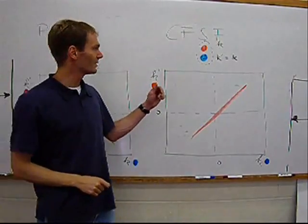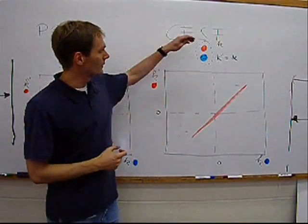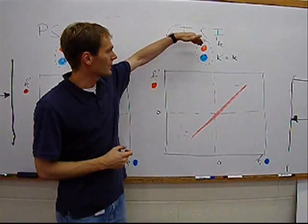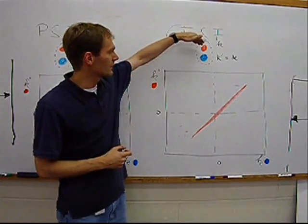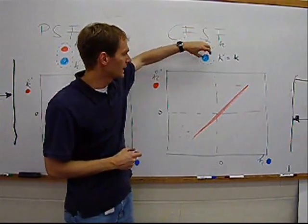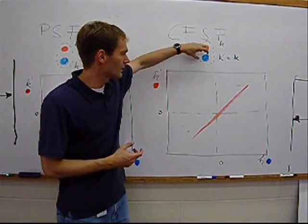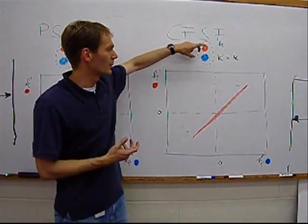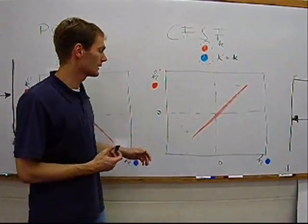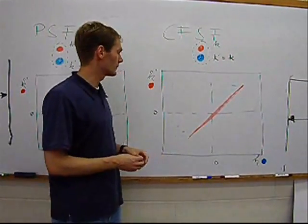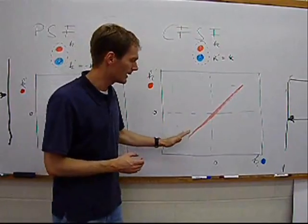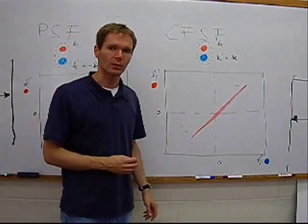For the counterflow superfluid phase, now you have anti-pairs. In this case, one atom species with momentum k of one species will be correlated with the momentum k of the other species. So now you get a strong power law divergence along k and k prime in your interspecies noise correlations.